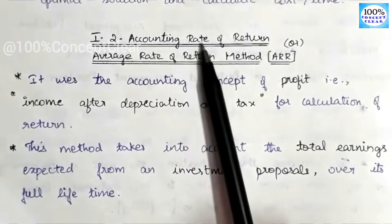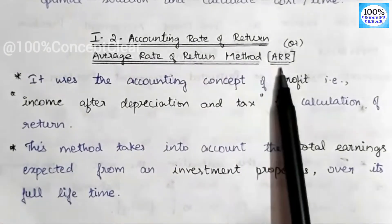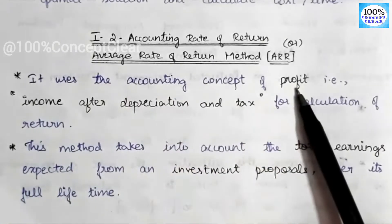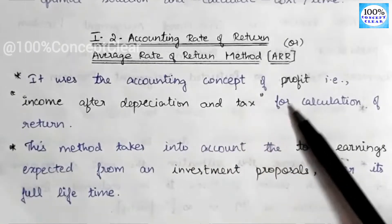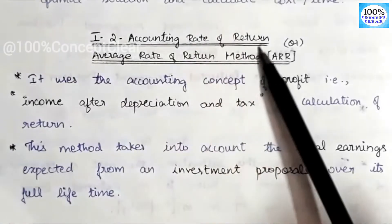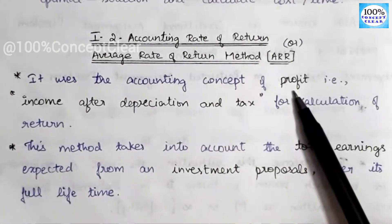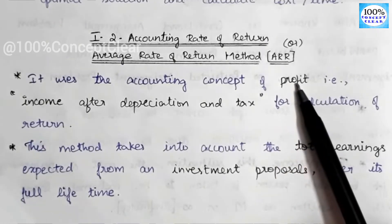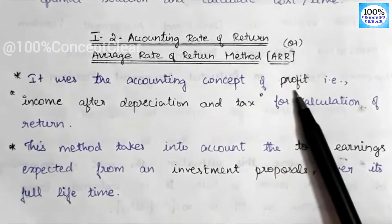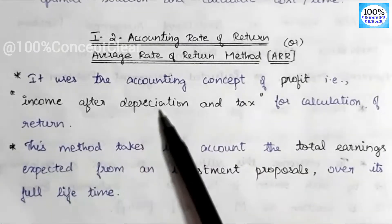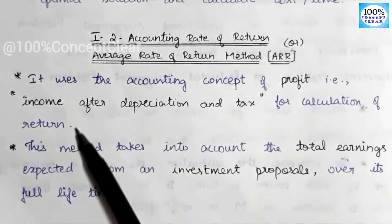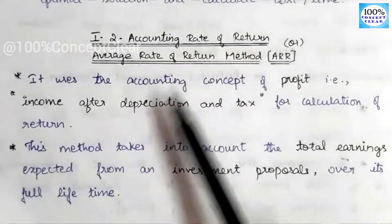Regarding the accounting rate of return — also called the average rate of return — in Chapter 4, we discuss the ARR method. It uses the accounting concept of profit, that is, income after depreciation and tax, for calculation of return. So in this method, we calculate profit on a return basis, whereas in the payback period we use a cash flow basis. Profit here means income after depreciation and tax.